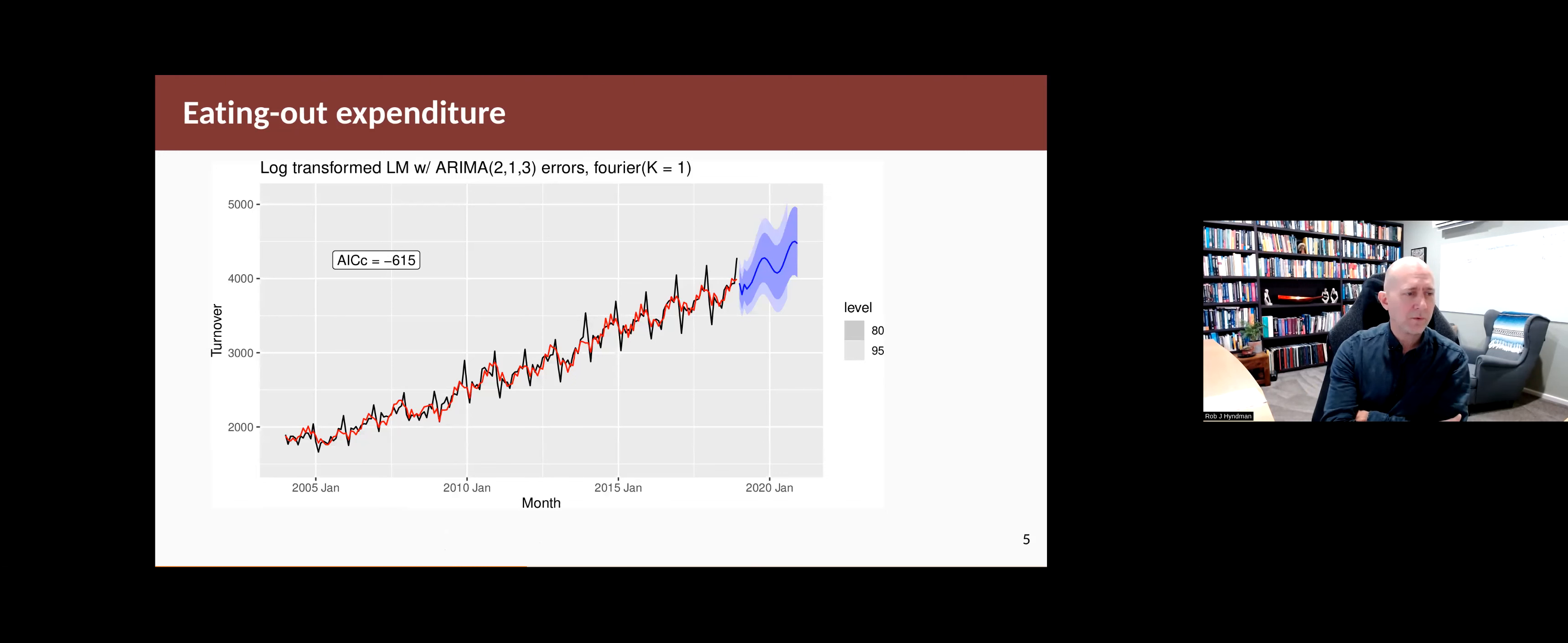So this is with k equals 1. So this is with sine wave for the Fourier terms. And notice that the ARIMA error is doing quite a lot of work here. So a 2, 1, 3 error, that's a lot of parameters to try to deal with the rest of the dynamics that are happening in the data set.